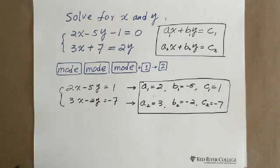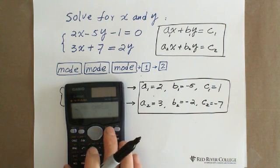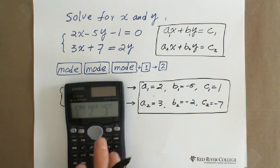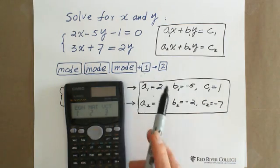You go to mode, mode, mode, hit mode three times. Let me show you: 1, 2, 3. Then equation, hit 1, which is equation.